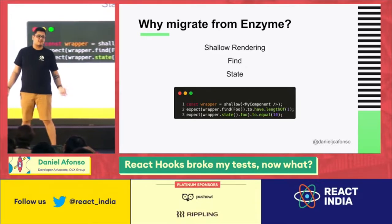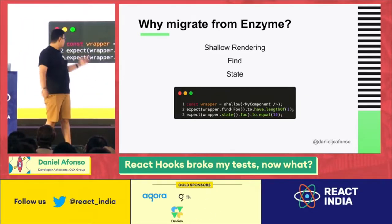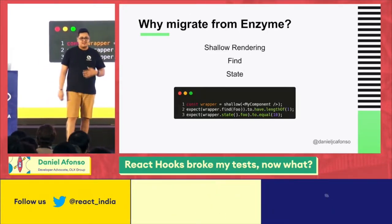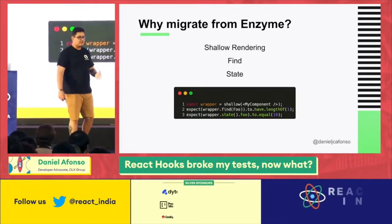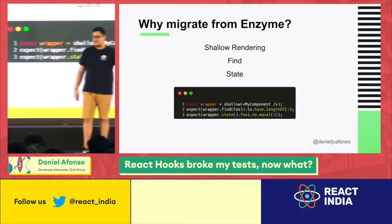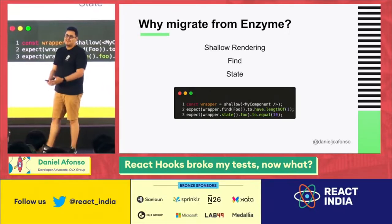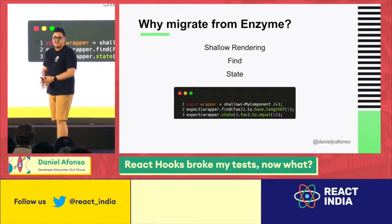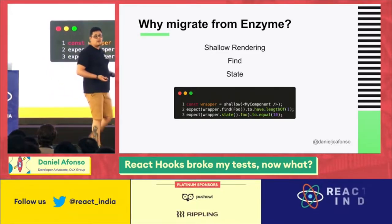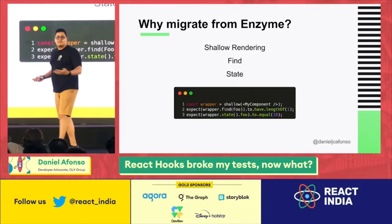Probably the biggest implementation detail is component state. Our tests at that time were deeply tied to state — checking and asserting if the component state was X or Y. The user doesn't care what the component state is. The user cares if they click on a button and something pops up — they don't care about the state.